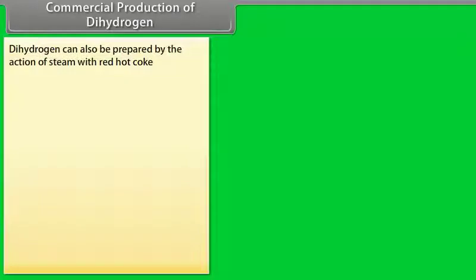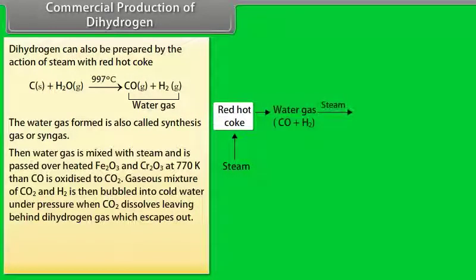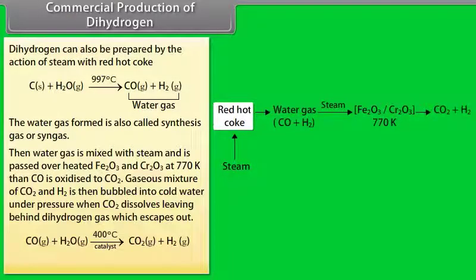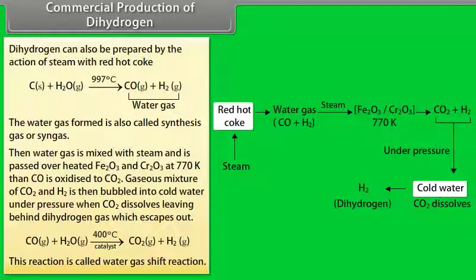Commercial production of dihydrogen. Dihydrogen can be prepared by the action of steam with red hot coke. The water gas formed is also called synthesis gas or syngas. Then water gas is mixed with steam and is passed over heated Fe2O3 and Cr2O3 at 770 Kelvin, then CO is oxidized to CO2. Gaseous mixture of CO2 and H2 is then bubbled into cold water under pressure when CO2 dissolves leaving behind dihydrogen gas which escapes out. This reaction is called water gas shift reaction.